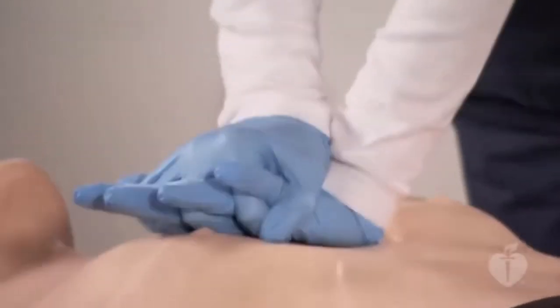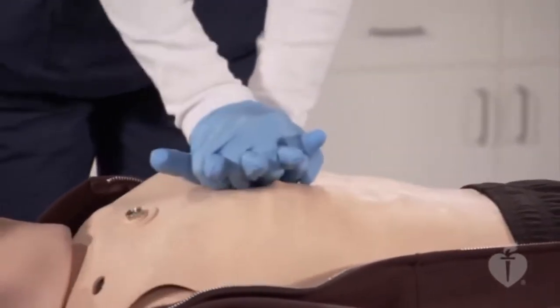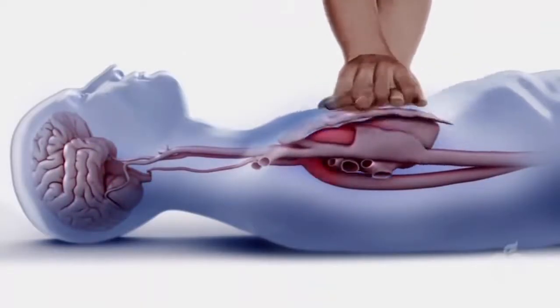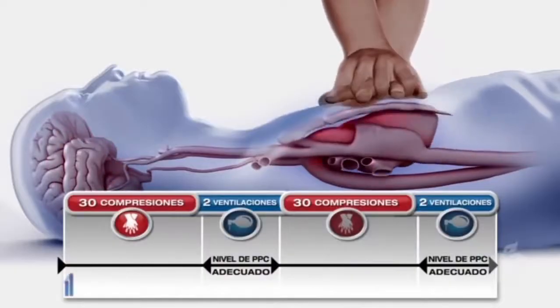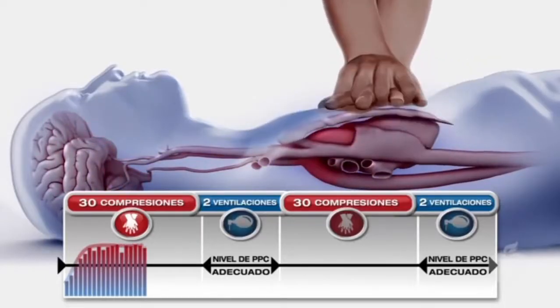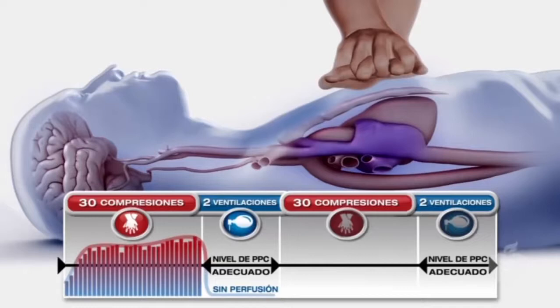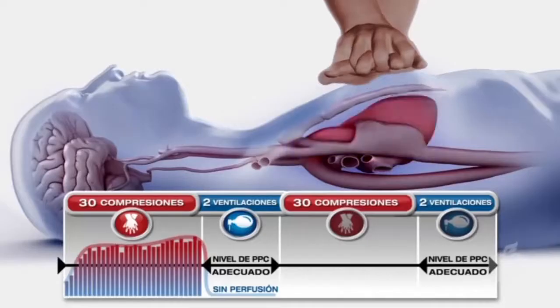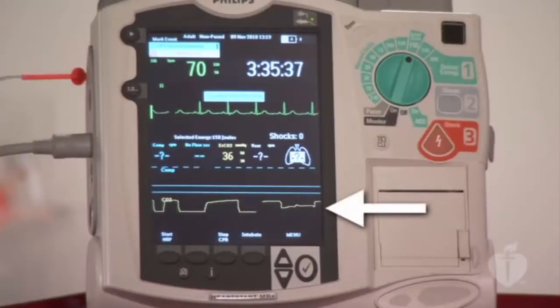Las compresiones torácicas mantienen el flujo en órganos vitales, especialmente el corazón, y son prioritarias durante los primeros minutos del paro cardíaco. Una forma de evaluar la efectividad de las compresiones es la presión de perfusión coronaria, que durante la RCP debe ser de al menos 10 mmHg para producir el retorno de la circulación espontánea o RCE.